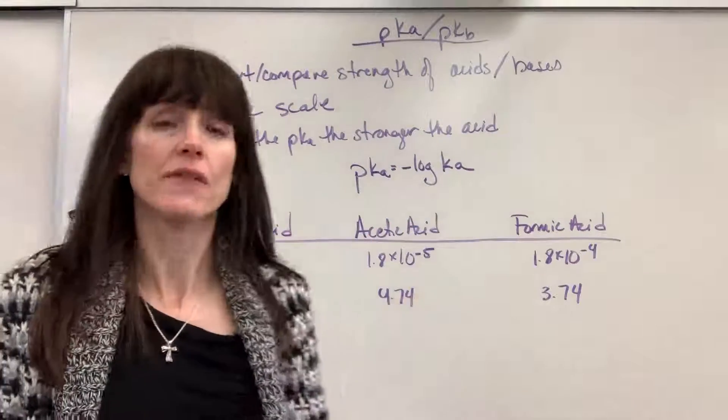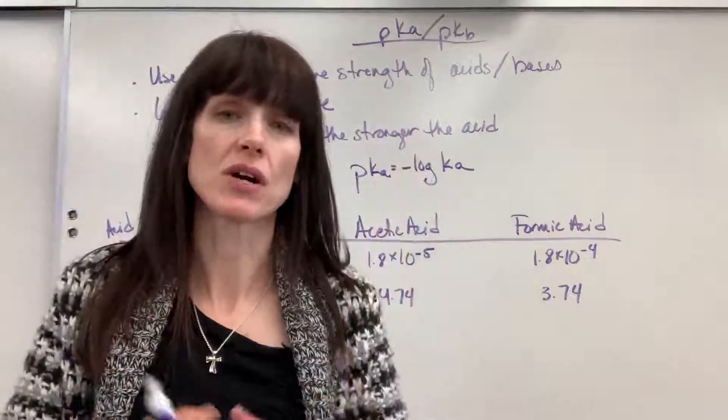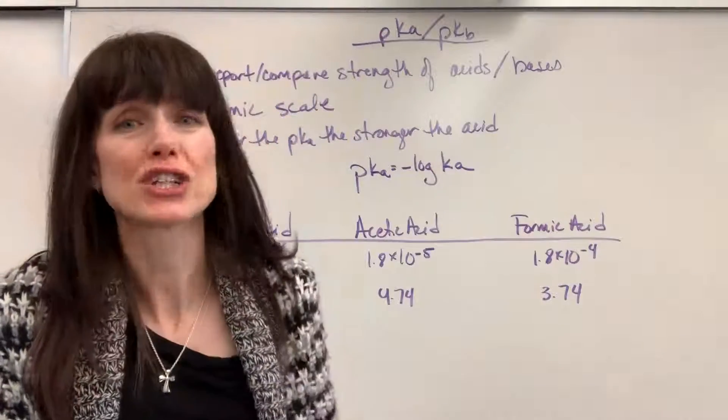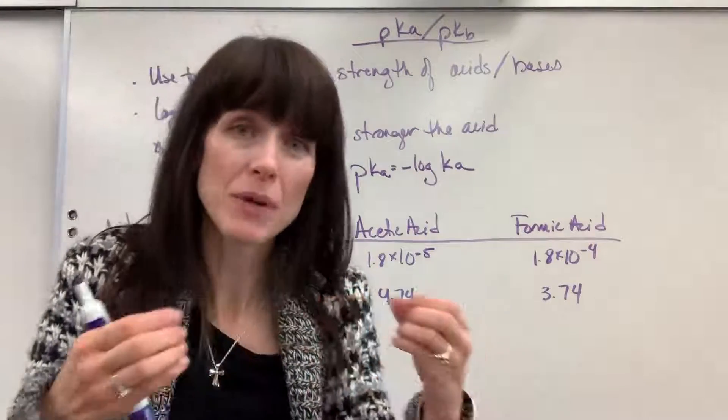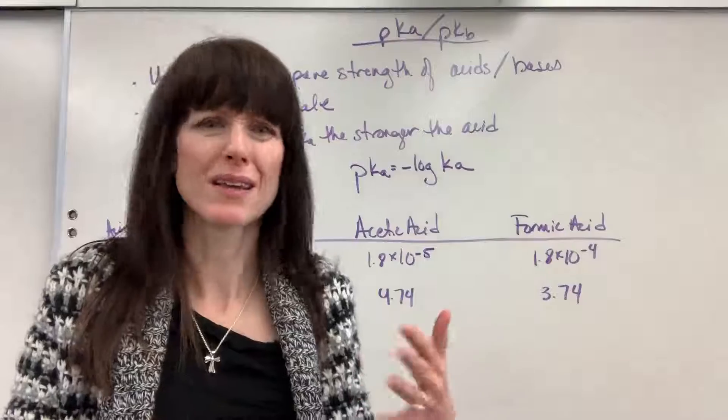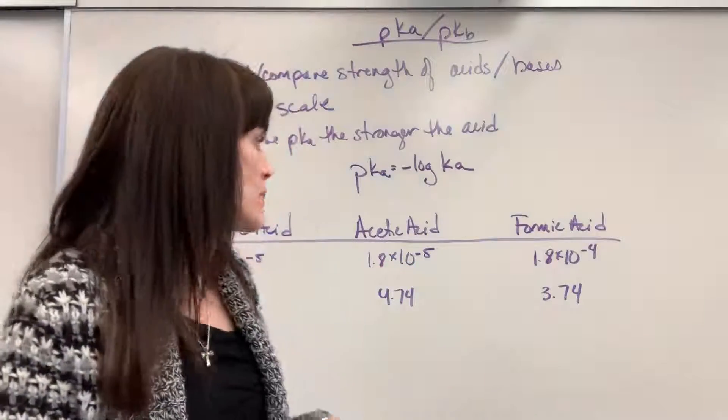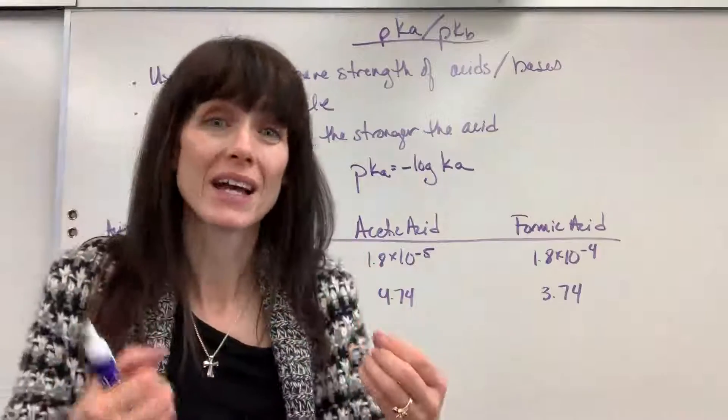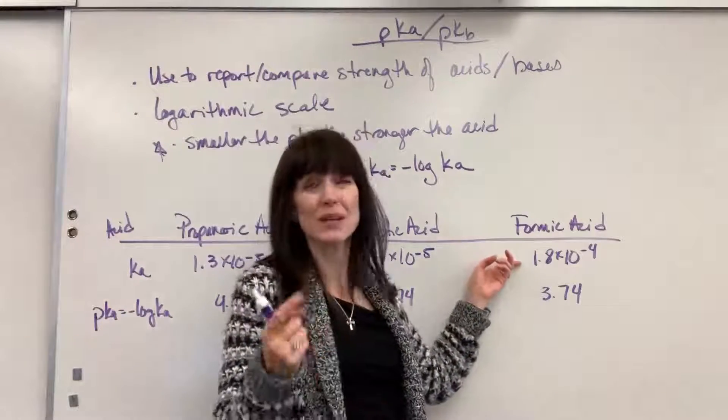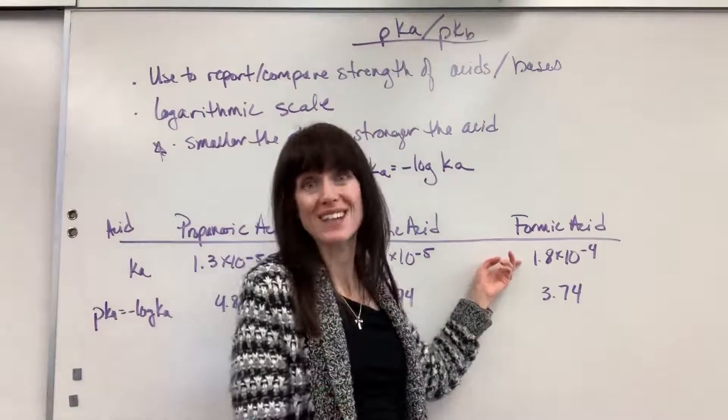Remember, these are all weak acids. They're not a part of our list of seven strong acids, which means these partially ionize. They only a little bit break apart. It's usually around like 3 to 5% that they'll actually break apart and ionize. So the more ionizes, the more product favored it is, the bigger the number, the stronger the acid.